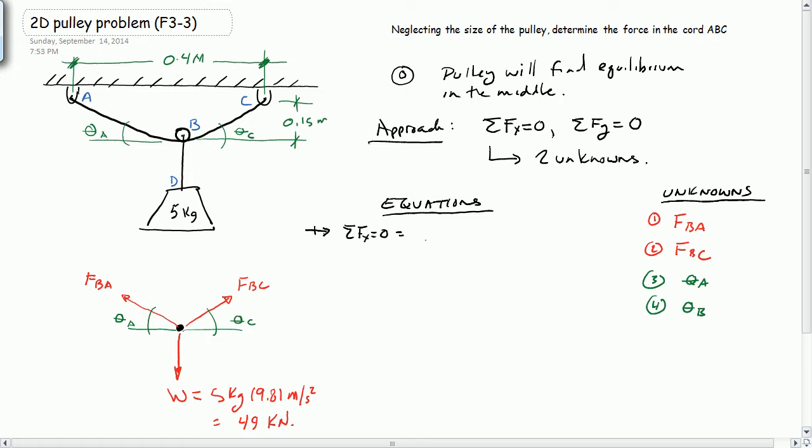So let's start them out here. The sum of the forces in the x-direction equals 0, to the right being positive. So we get FBA, negative direction, times the cosine of theta A, plus FBC times the cosine of theta C.